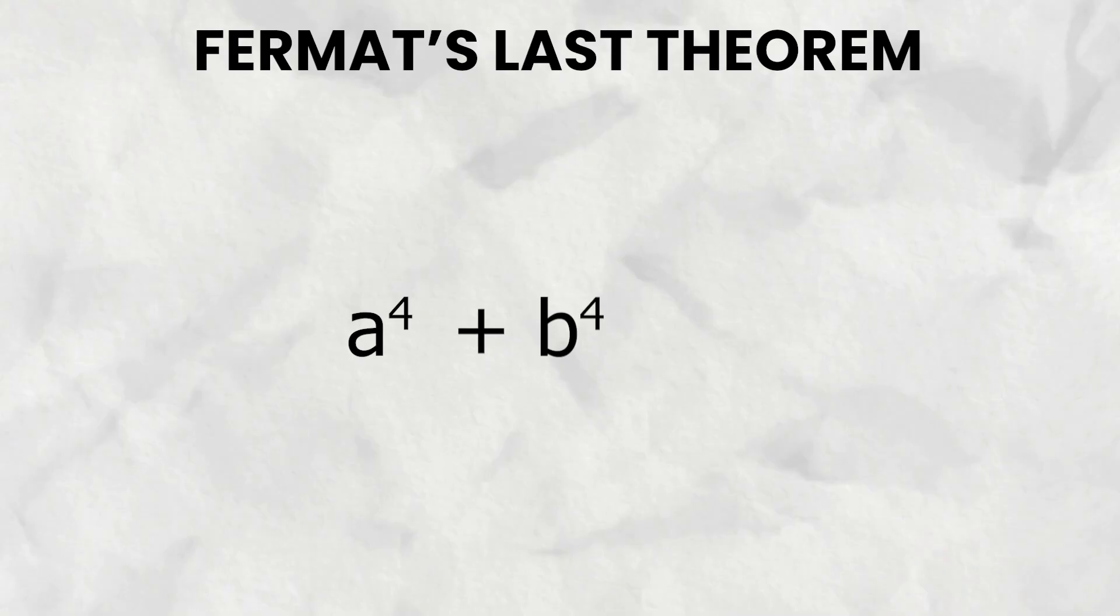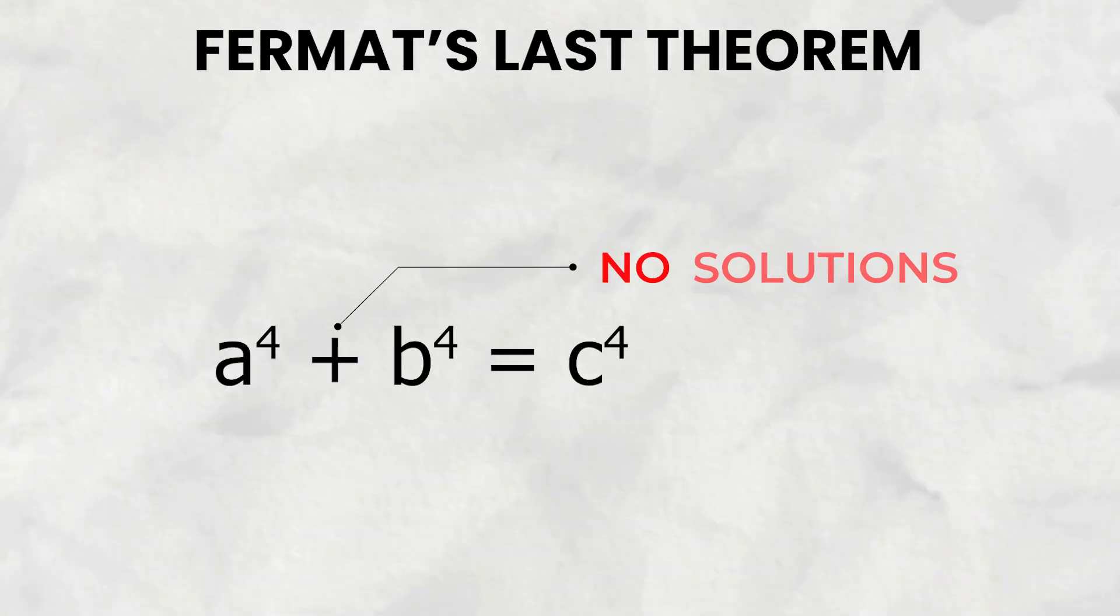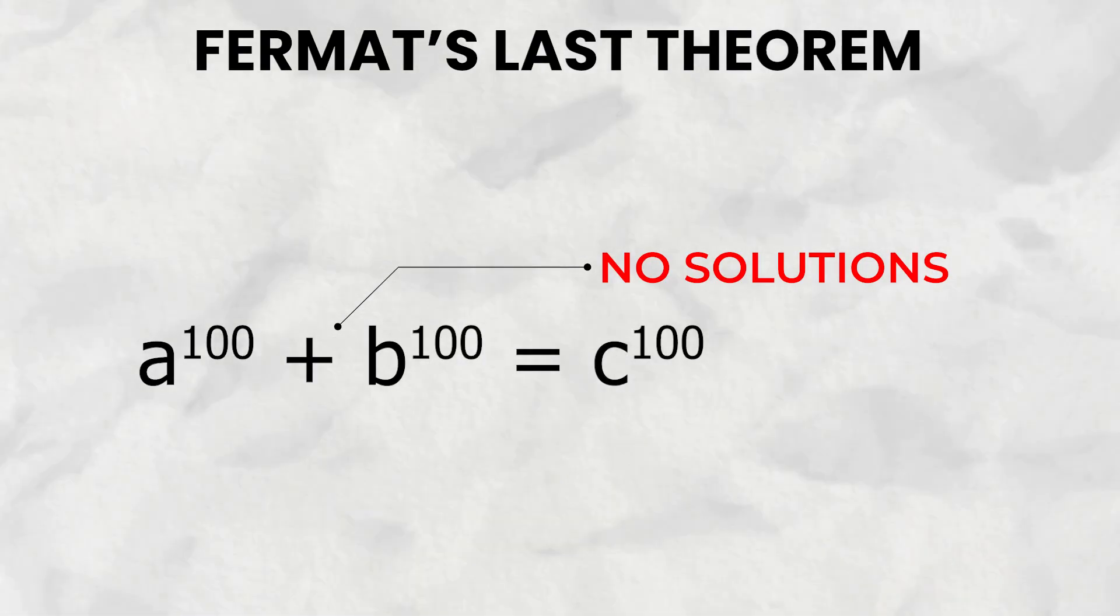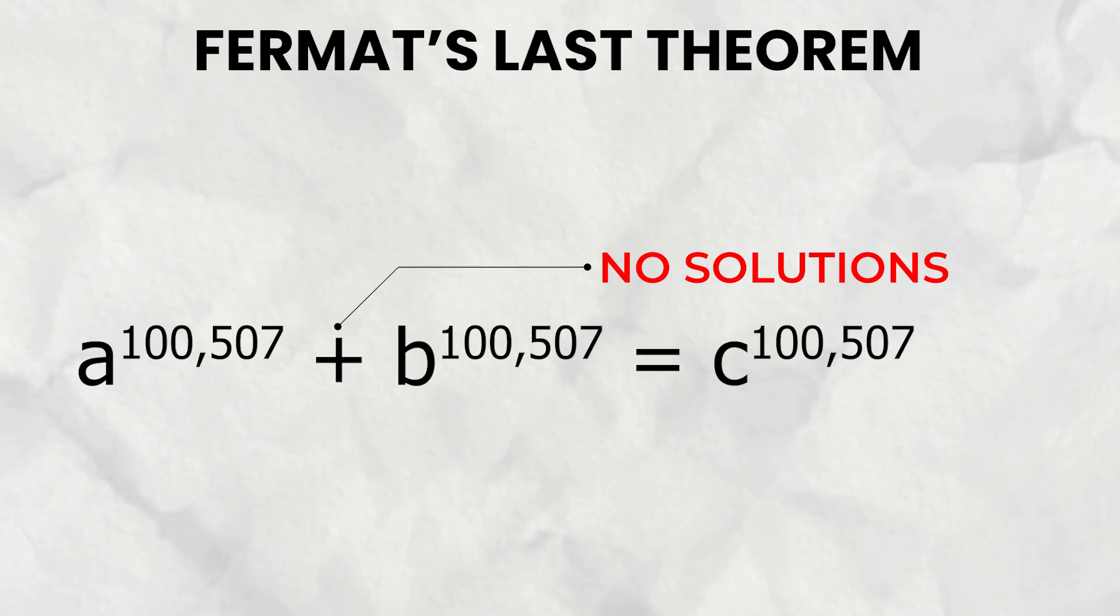Maybe a to the 4 plus b to the 4 equals c to the 4 will have some solutions? Except no, this equation doesn't have any solutions either. Same goes for degree 5, 6, 7, 8. Same goes for degree 100, and same even goes for degree 100,507.